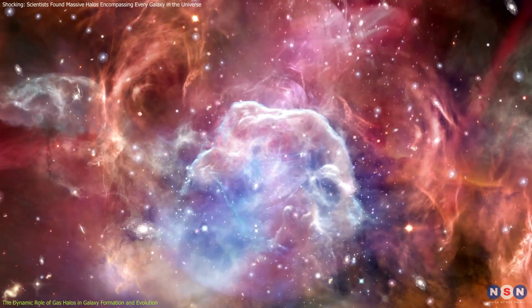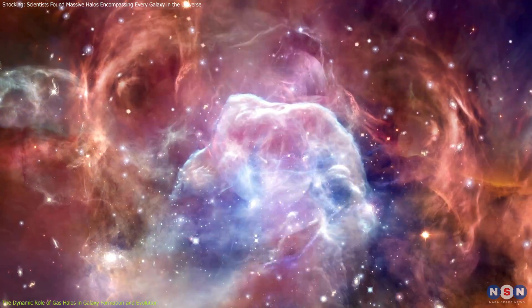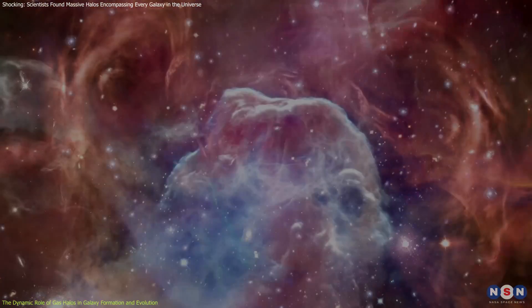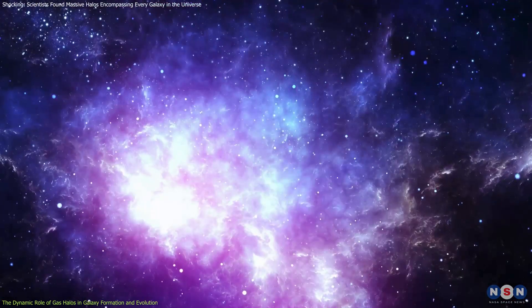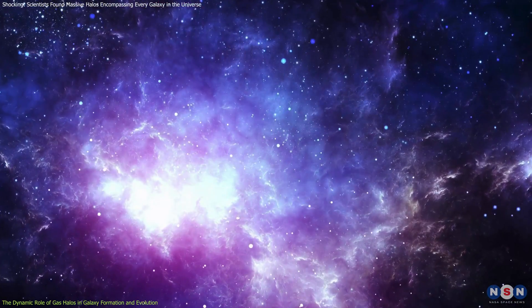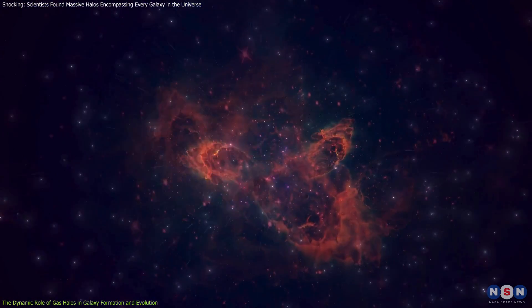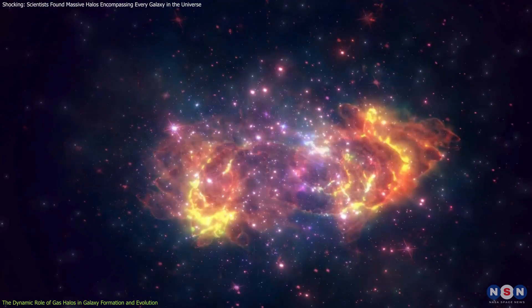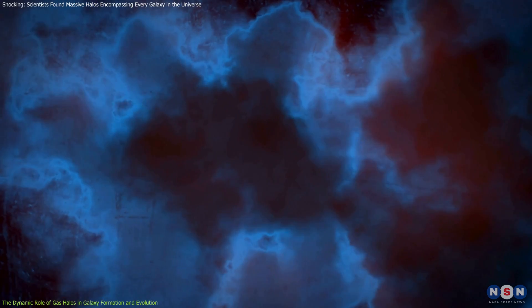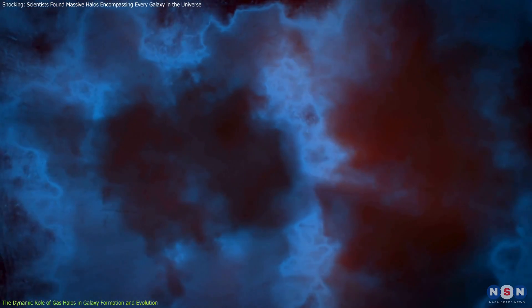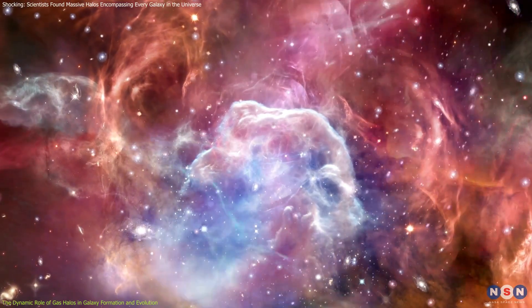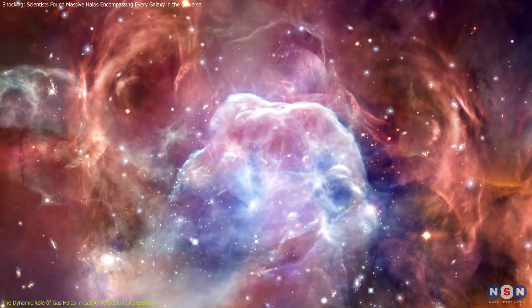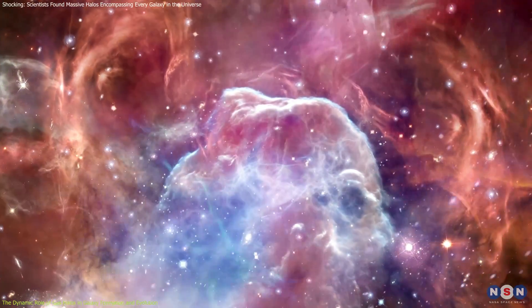One leading theory is that gas streams within the halos collide at high speeds, generating shock waves that cause the gas to glow. These collisions could produce enough energy to make the gas shine, even in regions where there is insufficient stellar radiation. This theory suggests that halos are not uniform structures, but rather dynamic and turbulent, filled with streams of gas moving in different directions and colliding like cosmic rivers.